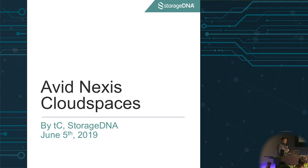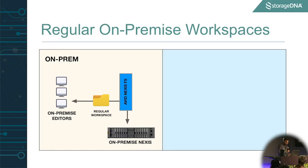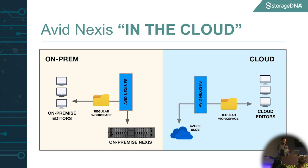This is what the on-premise looks like. You have your Avid file system sitting here. You've got a regular workspace. Your editors access that folder or workspace, which accesses the physical storage. In the cloud, pretty much the same thing is happening. Your cloud editors are accessing a regular workspace, which goes to the file system, but now goes to blob storage.